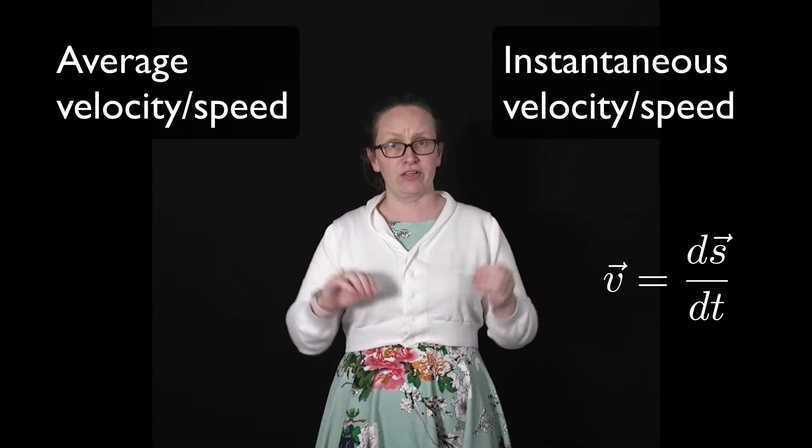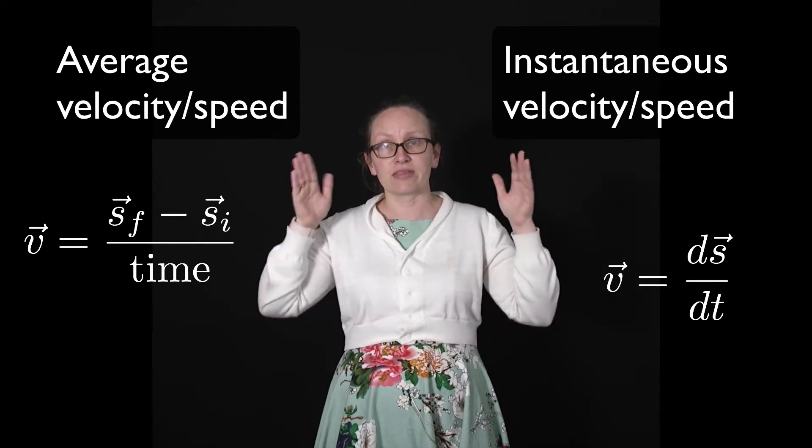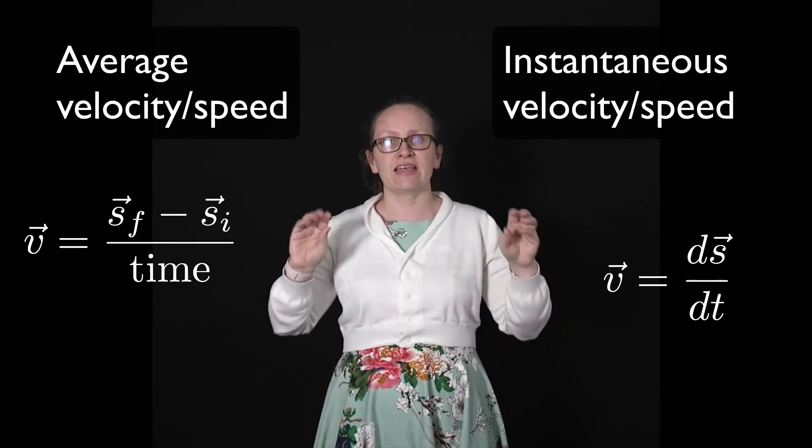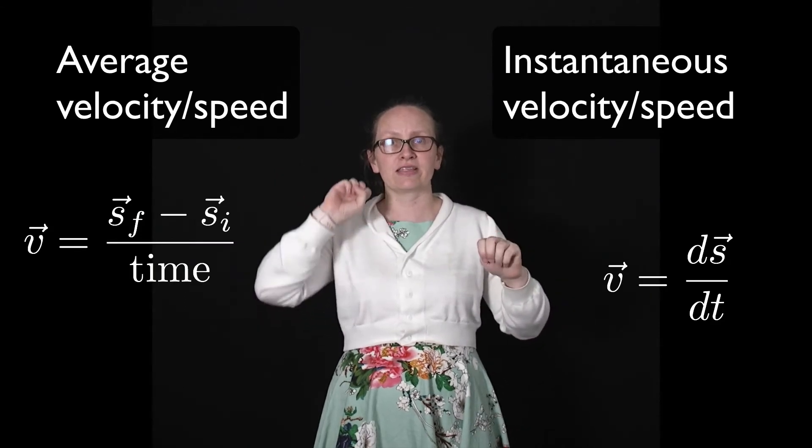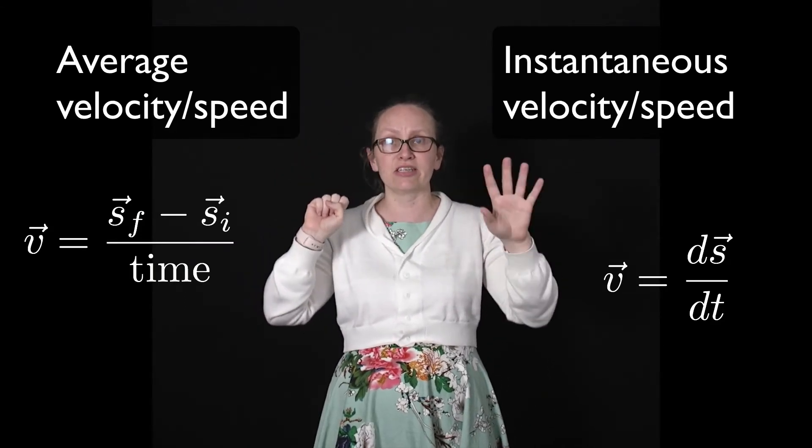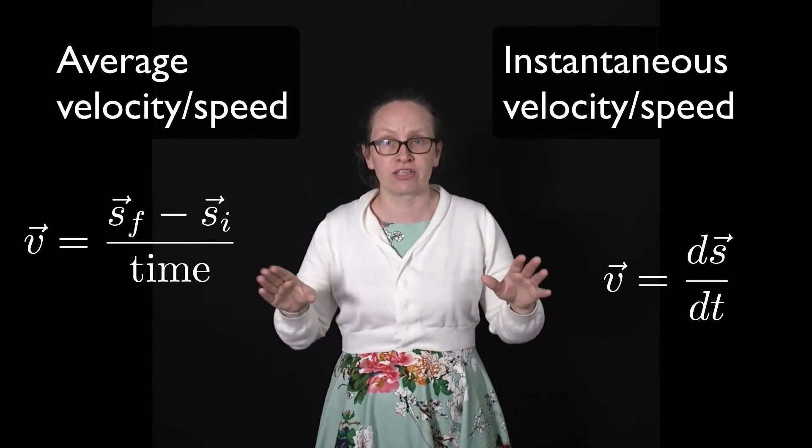The average velocity, on the other hand, we consider over some time interval, and it's the change in displacement over that time interval. So it's the final displacement minus the initial displacement divided by the time, which will give us the average velocity.